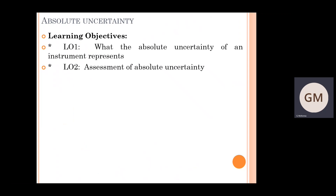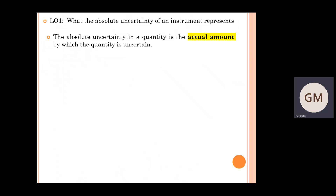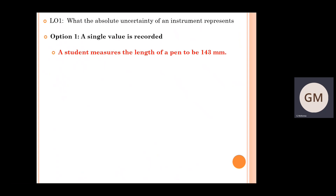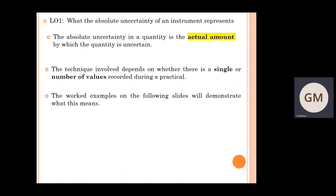There are two learning objectives we'll make our way through. The first is looking at what absolute uncertainties are and what they are for certain instruments, and then there's some assessment in relation to absolute uncertainties as well. The absolute uncertainty in a quantity is the actual amount by which the quantity is uncertain. The technique involved depends on whether there's a single or a number of values recorded during a practical investigation.